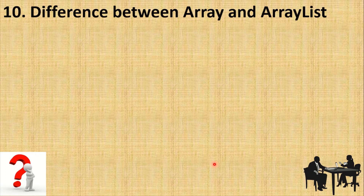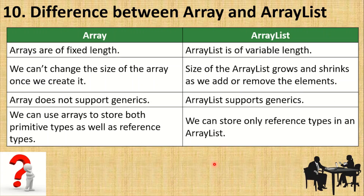The last and most important question — frequently asked in interviews and exams — is: what is the difference between Array and ArrayList? First, an array is of fixed length; we cannot change its length once declared. ArrayList is of variable length — we don't specify a size at declaration. Second, the size of an ArrayList grows and shrinks as elements are added or removed, depending on the load factor and initial capacity. Third, arrays do not support generics, but ArrayList does, making ArrayList type-safe.